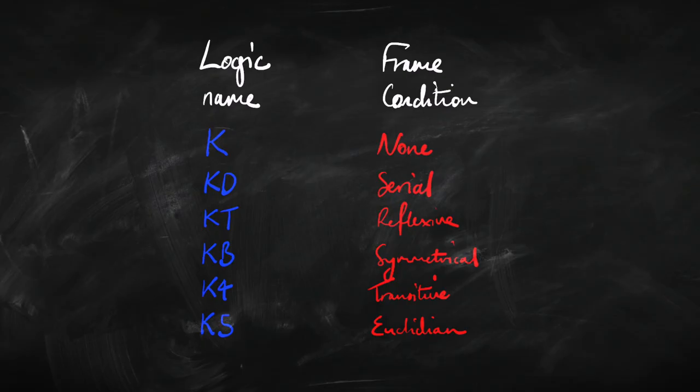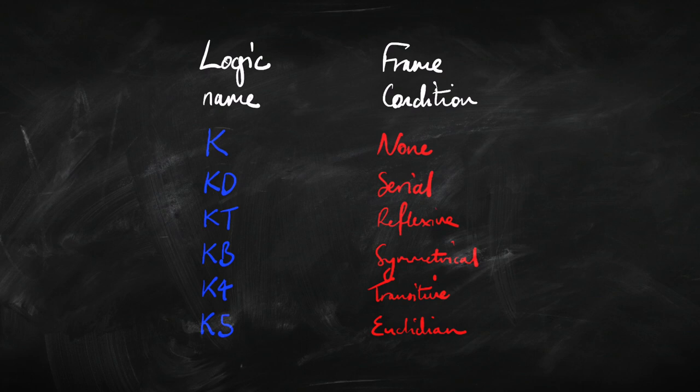If you're not sure about what I mean by reflexive models, transitive models, or whatever, go back to the previous video where we look at different systems of modal logic. Here's a quick reminder. We have these different systems of modal logic corresponding to the frame condition — the condition that we put on the accessibility relation — whether there's nothing in particular, whether it's serial, reflexive, symmetrical, transitive, or Euclidean. We've also got different combinations of these things.